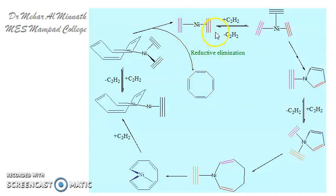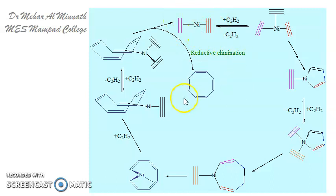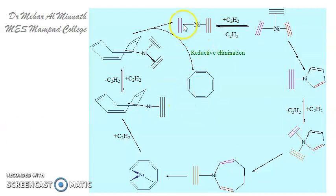So your nickel compound — the organonickel compound — is regenerated here. This is the synthetic mechanism of cyclooctatetraene via REP synthesis, which involves the use of organonickel.